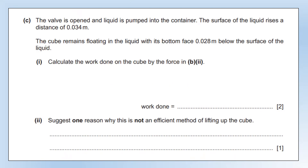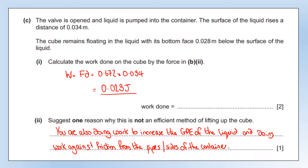The valve is opened and liquid is pumped in. The surface of the liquid rises 0.034 metres. The cube remains floating with its bottom face 0.028 m below the surface, so the same pressure acts upwards on it. Calculate the work done on the cube by the force. Work done is force times distance — we've calculated the force, and the distance is given as 0.034 m. Work done is change in energy, so it's measured in joules. For why this is not an efficient method of lifting the cube: either you're also doing work to increase the GPE of the liquid as it rises, or you're doing work against friction from the pipes or sides of the container.